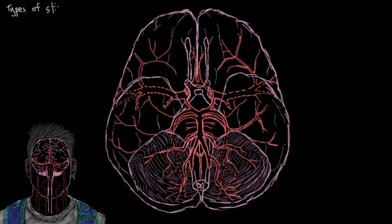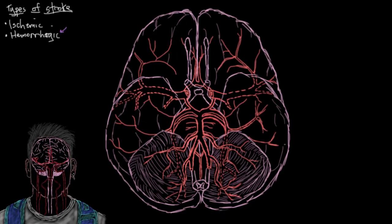There are two main types of stroke: ischemic stroke and hemorrhagic stroke. In this video we'll cover hemorrhagic strokes, which account for approximately 25% of all strokes.